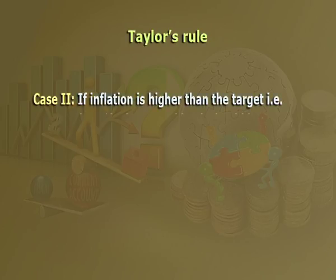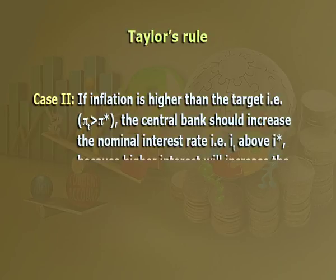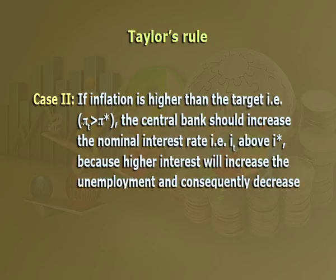Case two: if inflation is higher than the target (π_t > π*), the central bank should increase the nominal interest rate above i*, because higher interest rates will increase unemployment and consequently decrease inflation. Coefficient a should reflect how much the central bank cares about inflation. Taylor pointed out that a should be larger than 1, because for spending, the real interest rate is more important than the nominal interest rate.